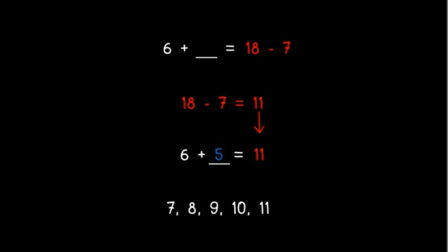So 6 plus 5 equals 11. So we know that 6 plus 5 is equal to 18 minus 7, and that's a true equation.